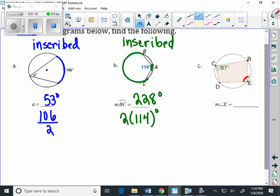So we can take 180 degrees and subtract 87. And when we subtract 87 from there, our measure of angle E is 93.